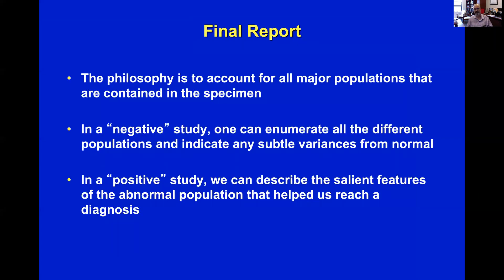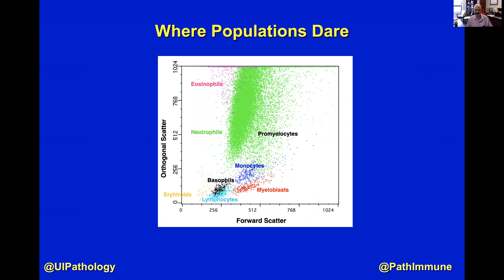The philosophy of our report is to account for all major populations contained in the specimen. In a negative study, we enumerate all different types of population — for example, this bone marrow contains 70% granulocytes, so many monocytes, etc. In a positive study, we describe the salient features of the abnormal population so that those features help us reach a diagnosis. This is different from just doing percentages within gates. We'll end video two here and I'll see you in video three.